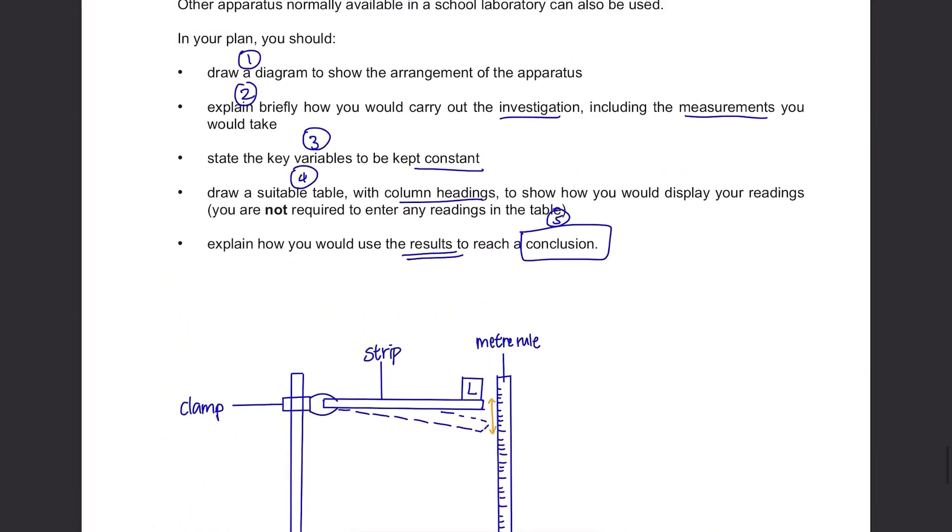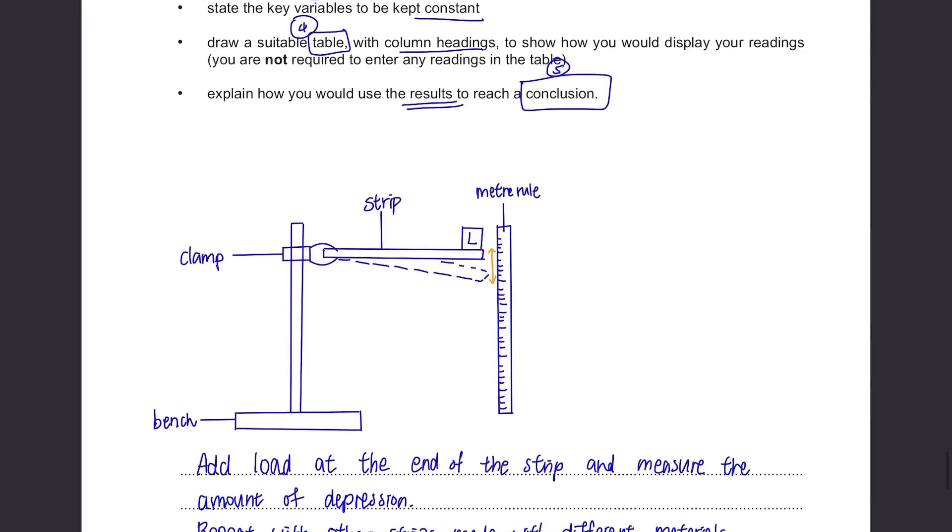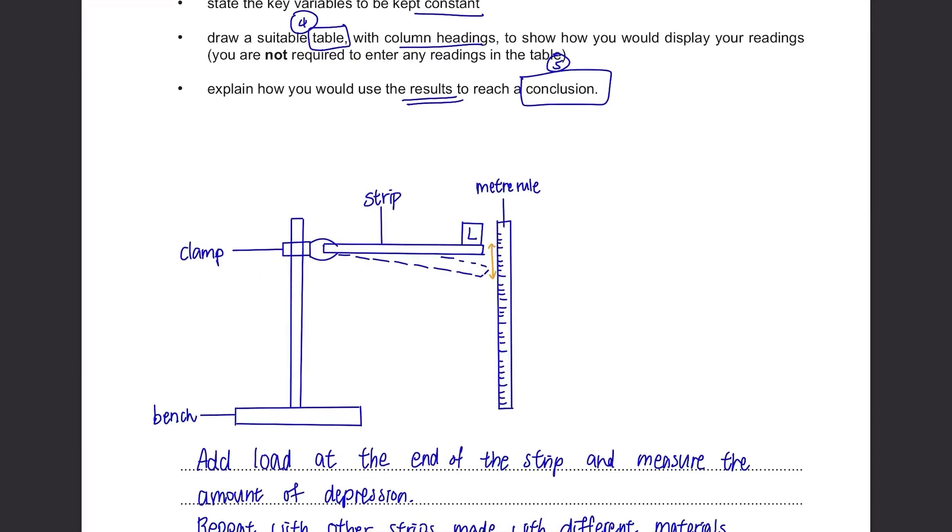We've done this three so let's draw a table. It's simple, we varied the material so put a column for that. Then the load used should be included and also the depression in centimeters.